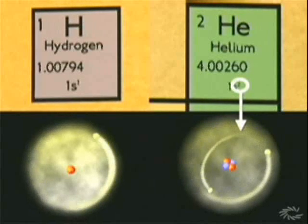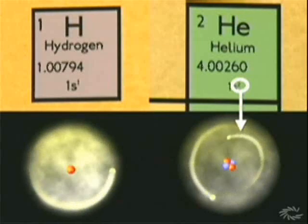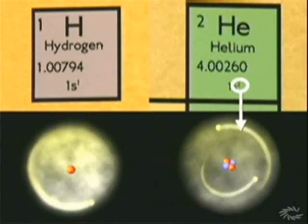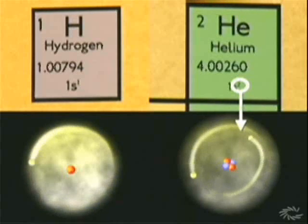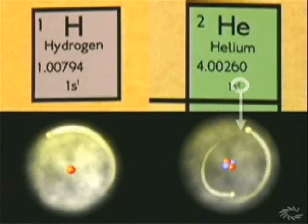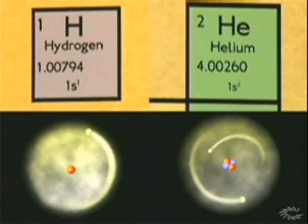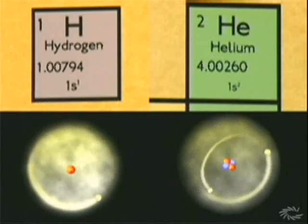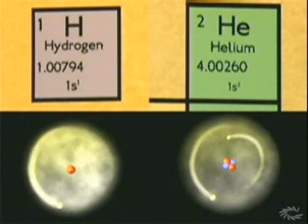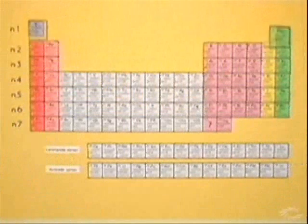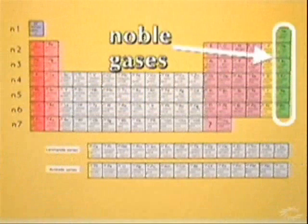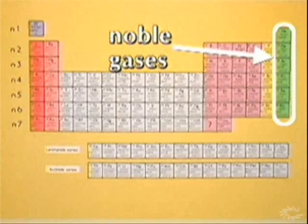Helium has two electrons, and the first energy level can accommodate two electrons. As a result, helium is very stable and rarely interacts with other elements. In fact, helium is one of the noble gases that are on the right-hand side of the periodic table.